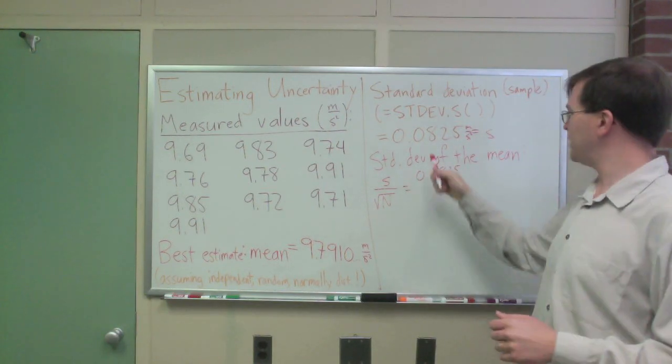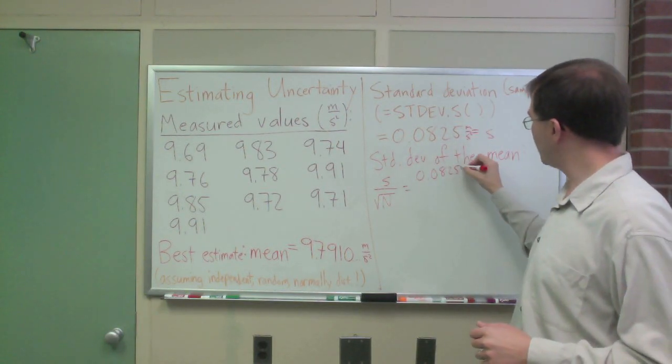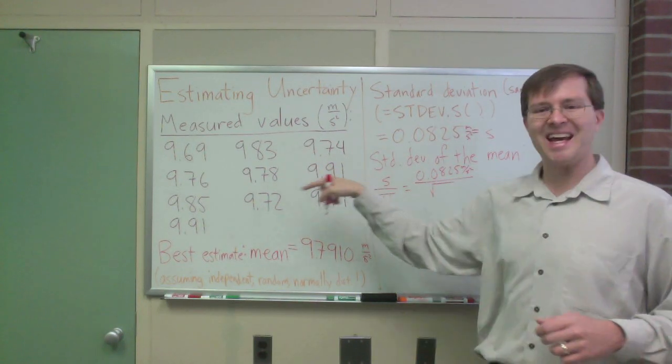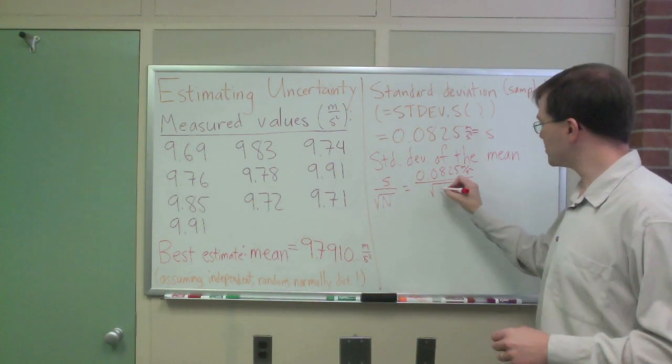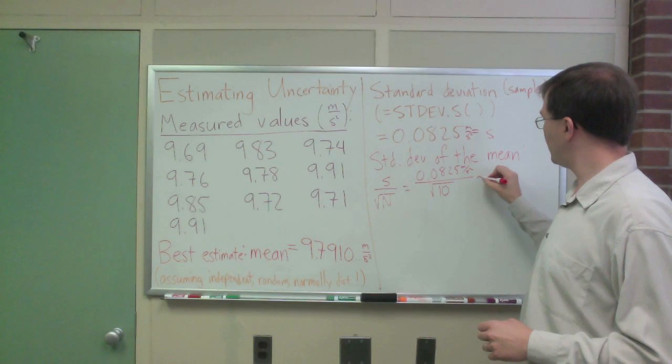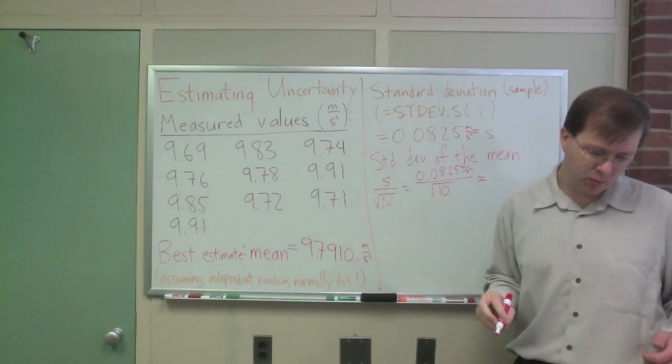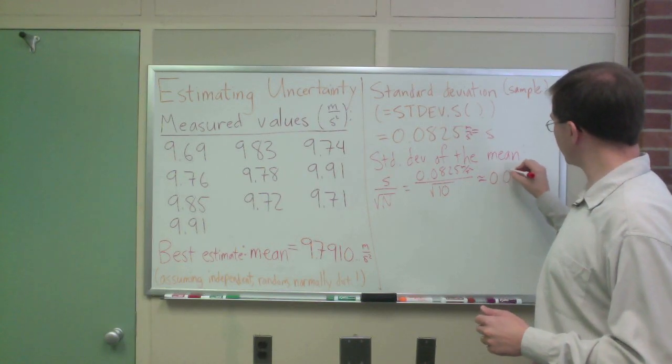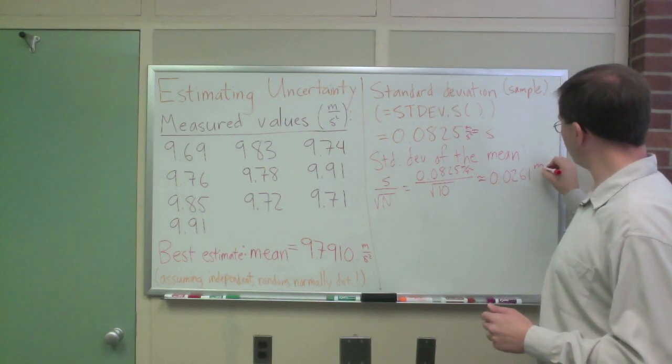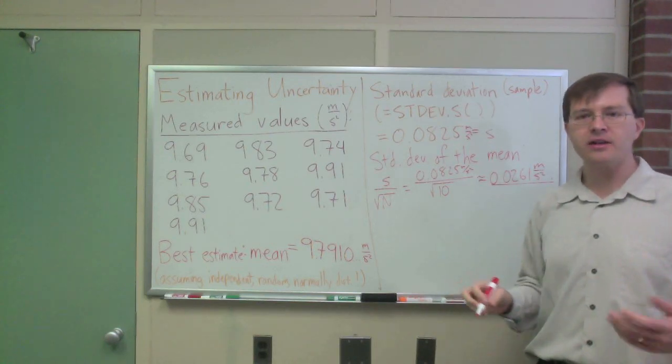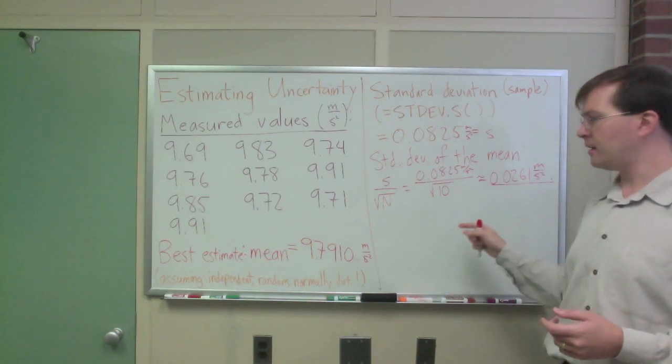Always include the units in your values. So I've got that, meters per second squared, divided by the square root of, I had 10 data points, that's my n, so divided by the square root of 10, and what I get from this is, 0.0261 meters per second squared, again, it's got units.